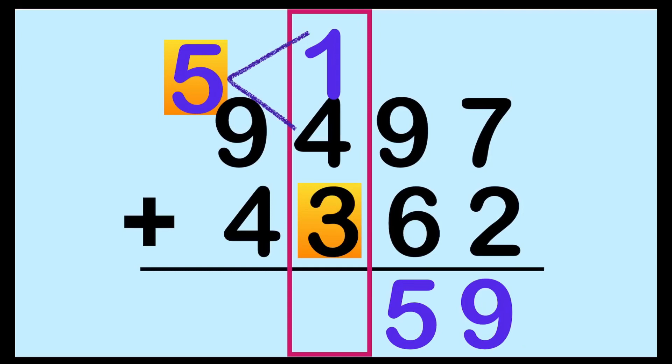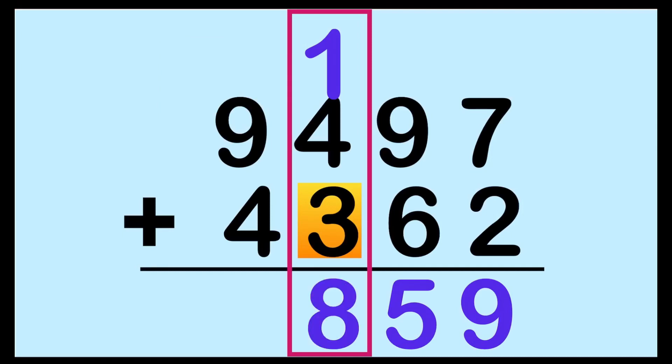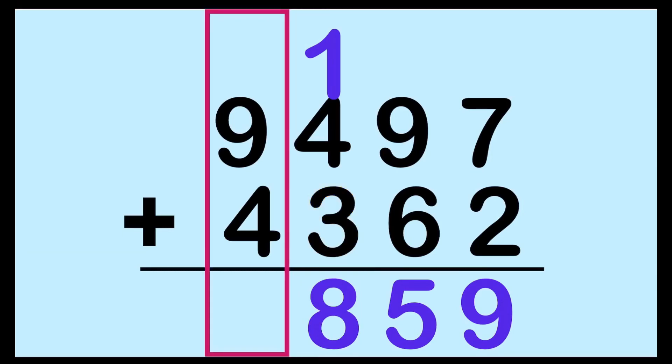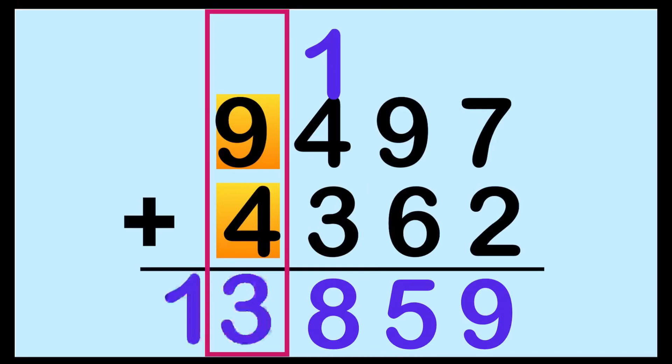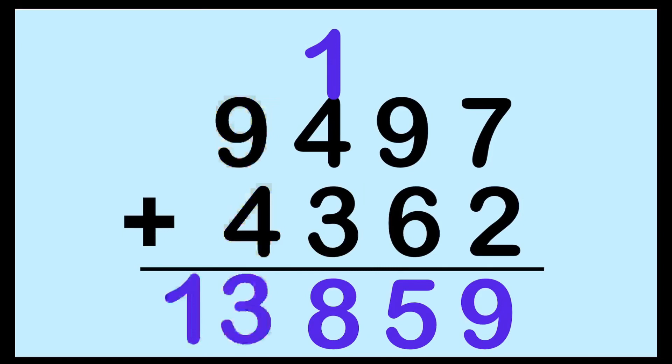Then 5 plus 3 — put 5 on your mind, big number: 5, 6, 7, 8. We have 8 here. We can now proceed to the thousands place. 9 plus 4 — put 9 on your mind: 9, 10, 11, 12, 13. We have 13 here. Since we don't have any more numbers at the next place value, we can now leave 1 at the bottom. So the sum of 9,497 and 4,362 is 13,859.